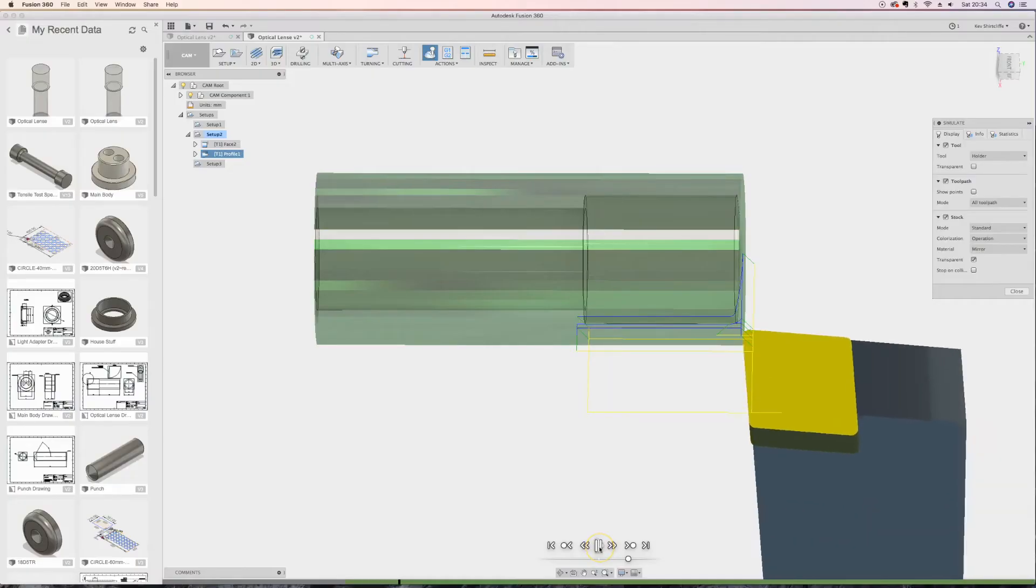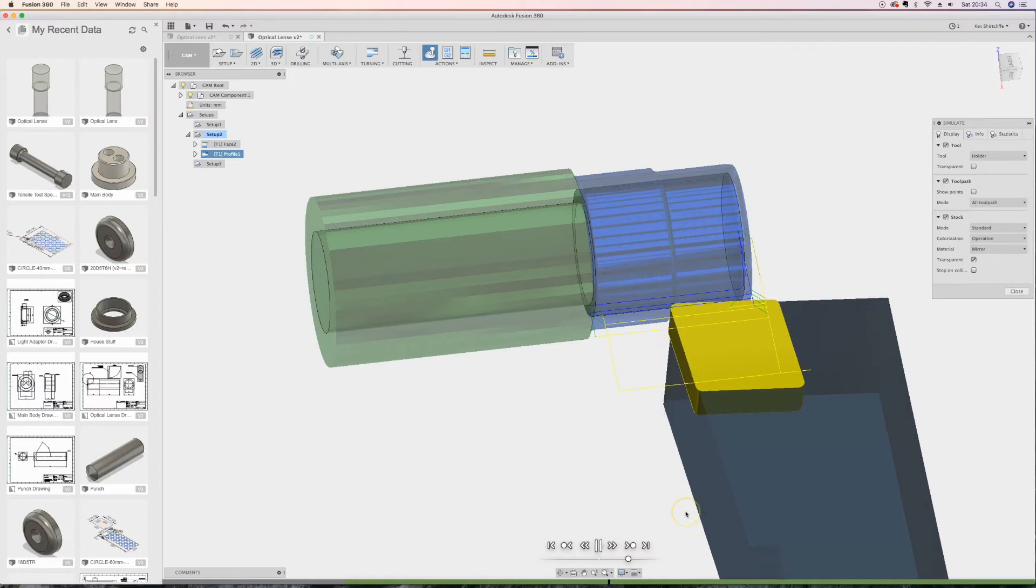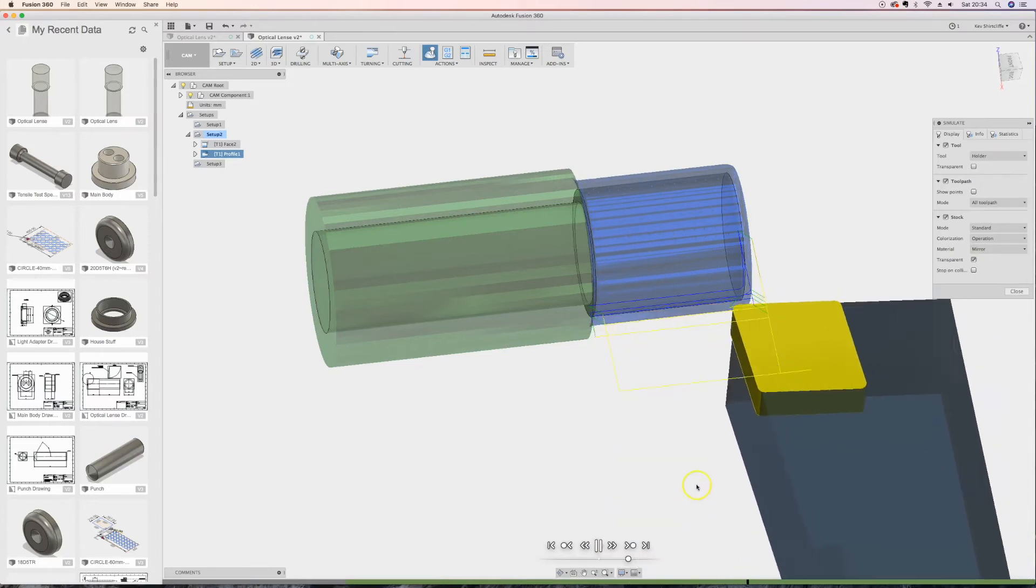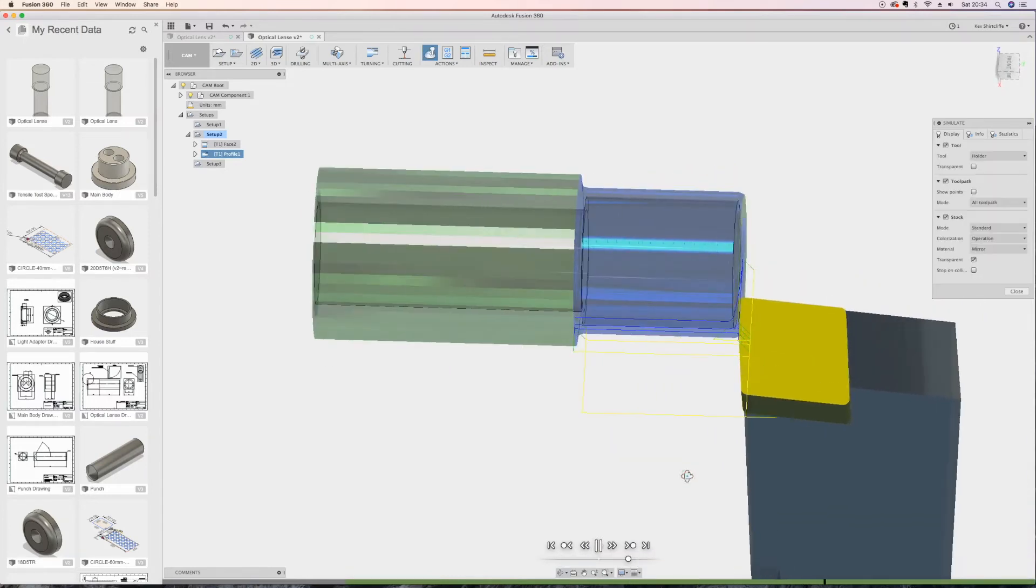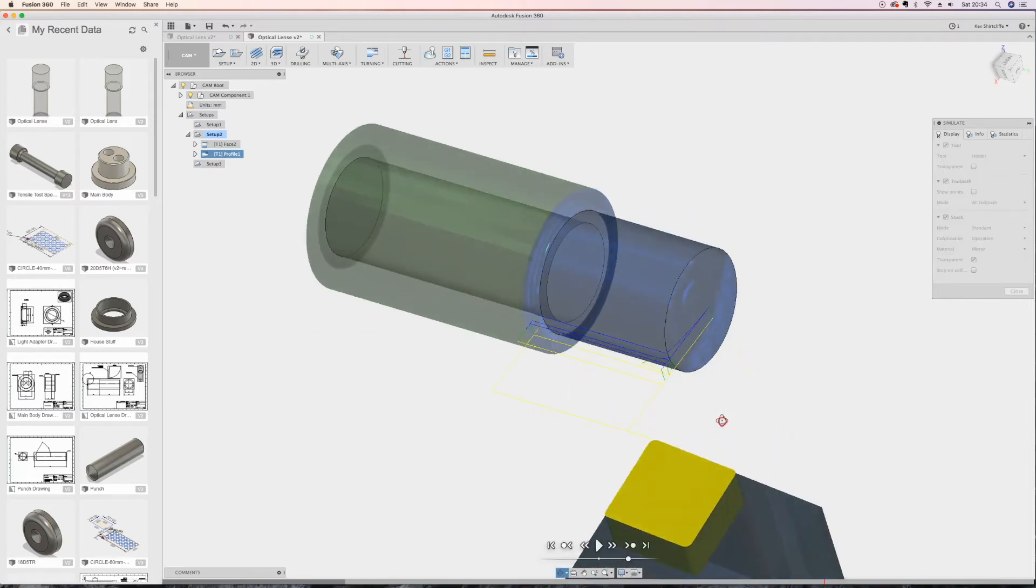The toolpaths are pretty simple, just machining off the front. We're going to face then profile, and we're actually leaving the entire back of the stock there because we're trying to minimize deflection, and so we've machined that up on the conventional machine first.